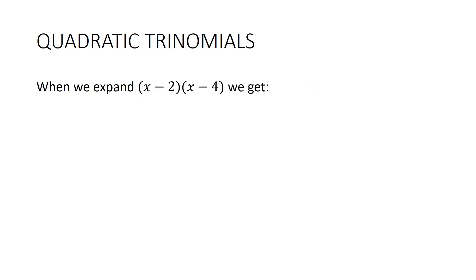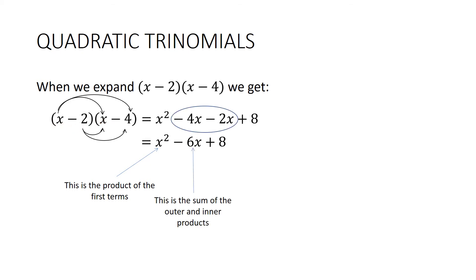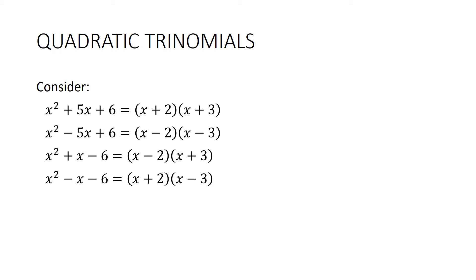Let's look at what happens when we expand two brackets to develop a theory for factorising. Using FOIL on (x − 2)(x − 4) gives x² − 4x − 2x + 8, which is x² − 6x + 8. The first term is the product of the first terms; the middle term is the sum of the outer and inner products; and the last term is the product of the last terms. There are four types based on the signs in the brackets: plus-plus, minus-minus, minus-plus, or plus-minus.